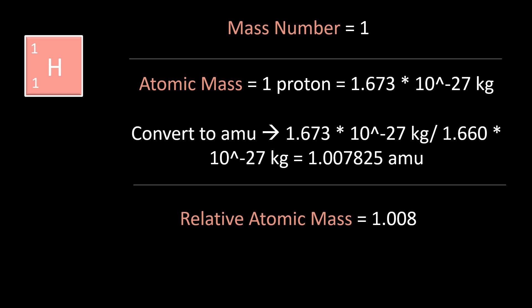As an example, consider protium, which is a hydrogen atom with one proton. Its mass number is one due to a lone proton, and its atomic mass in AMU is the mass of a proton divided by the AMU mass in kilograms, which is 1.675 times 10 to the negative 27 kilograms, divided by 1.660 times 10 to the negative 27 kilograms, which equals 1.007825 AMU.